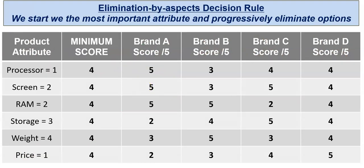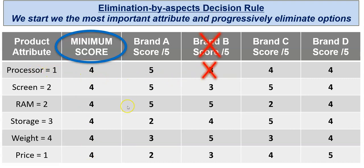For Elimination by Aspects, we work through attributes in ranked order — first, second, third — requiring a minimum score of at least four on each. Looking at processor first, brand B only scores three so it's eliminated immediately. Moving to price, brand A doesn't score four so it's also out. That leaves brand C and D. Checking screen and RAM next, brand C doesn't score four on RAM, so it's eliminated. That leaves only brand D.